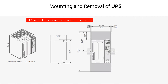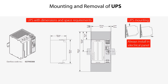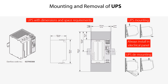Here you see the UPS with dimensions and space requirements specified. The UPS is designed for DIN rail mounting, as seen illustrated here, and should always be installed in an electrical panel. If needed, you can remove the UPS from the DIN rail, as illustrated here. You can find more information in the UPS installation guide.